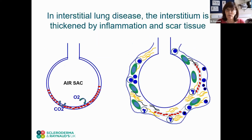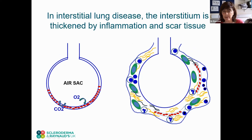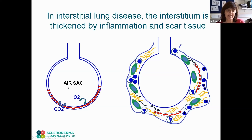In interstitial lung diseases overall, the interstitium — the area that separates the red blood cells from the air sac — is thickened by a mixture of inflammation and scar tissue, as we can see here on the right. This makes the exchange of oxygen going into the red blood cells and carbon dioxide being moved out of the blood cells into the air sac more difficult.